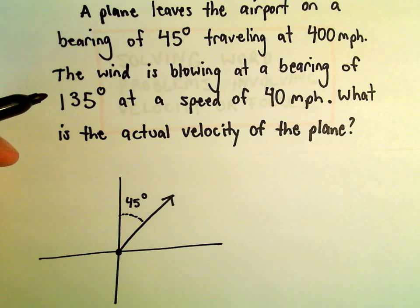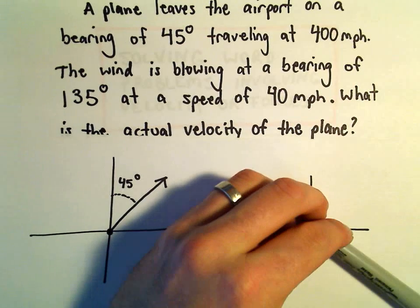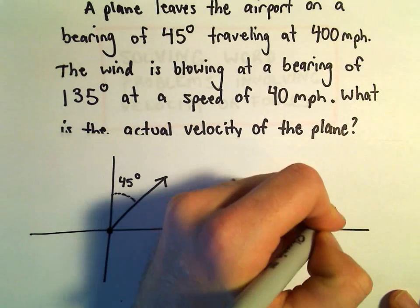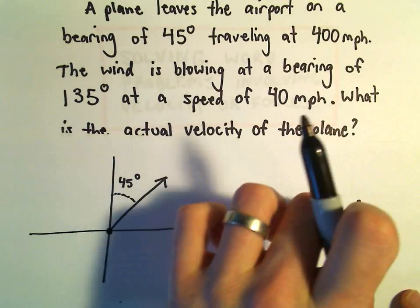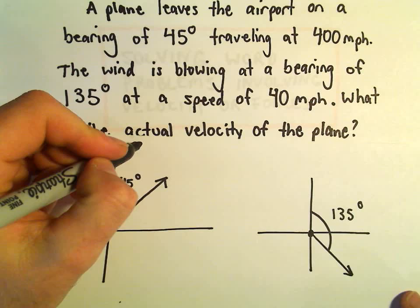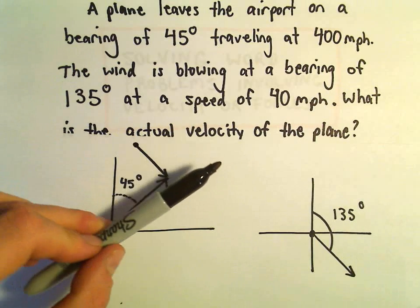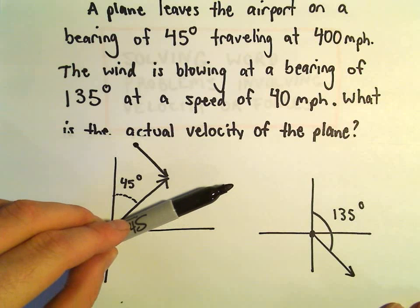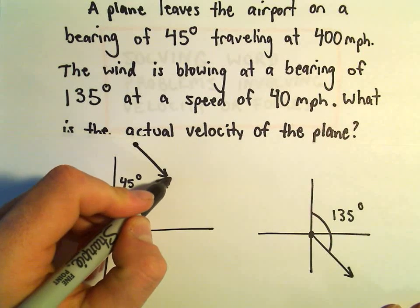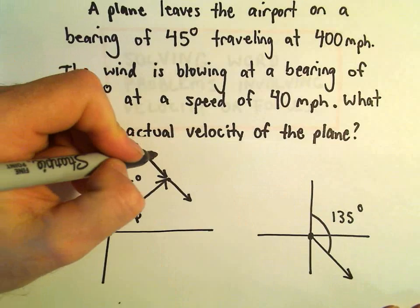The wind is blowing at a bearing of 135 degrees. If you think about it: 0 degrees, 90 degrees, 135 degrees would be pointing in this direction. We can move this vector around anywhere we want to, so imagine taking this vector and sticking it on the plane — here's our vector pointing against the plane. Intuitively, the plane is going to start drifting a little bit more east than north. We can call the original vector P for the plane, and this new vector W for the wind.